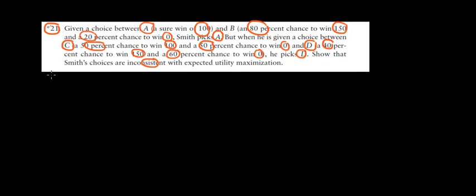So what is an expected value? The expected value of gamble A is the probability of that outcome times the value of that outcome. So in this case, what is the probability in A? A sure win, because it's sure it means it's 100%. 100% we note it as 1 times the value of 100, so that's an expected value of 100.